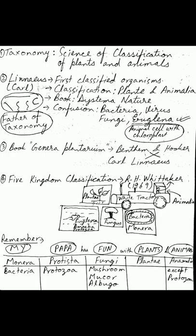One important question: whether Euglena is a plant or an animal. Euglena can be considered a plant because it has chlorophyll, and it can be considered an animal because it does not have a cell wall. Another important question is whether algae is a plant or Protista.